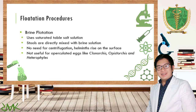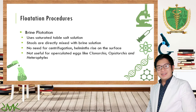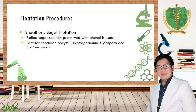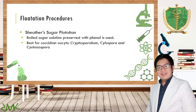For brine flotation, it uses saturated table salt solution and requires no centrifugation because helminths rise to the surface. However, brine flotation is not useful for operculated eggs, which have a lid-like structure. Sheather's sugar flotation uses boiled sugar solution preserved with phenol and is recommended for Cryptosporidium, Cyclospora, and Cystoisospora.